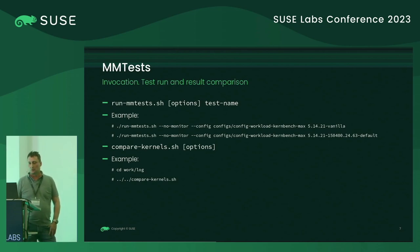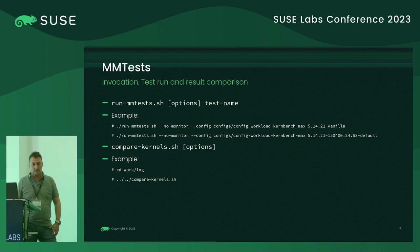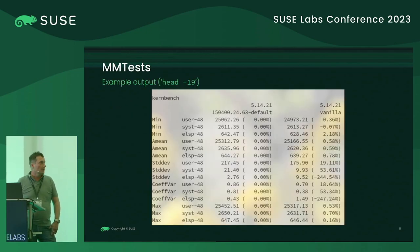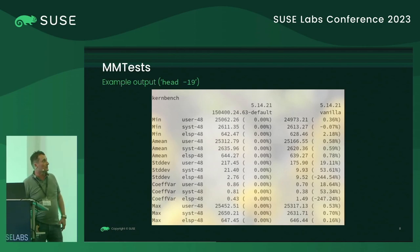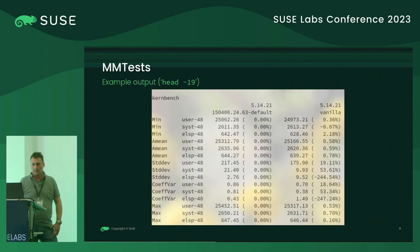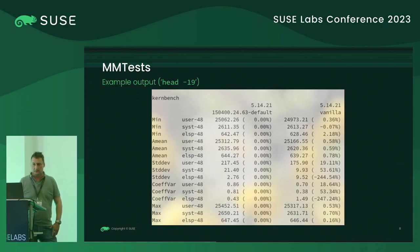There is another script in mmtest called comparekernels.sh, which is used to compare the results. The Perl code in mmtest is mostly used to extract, parse, and process results from different benchmarks. If you change to the work/log directory and call the comparekernel script, mmtest creates a comparison of the two benchmark runs with different kernels, providing different statistics. The most important thing is the arithmetic mean for the benchmark run — for user, system, and elapsed time. In this example, there is no significant change between both runs.